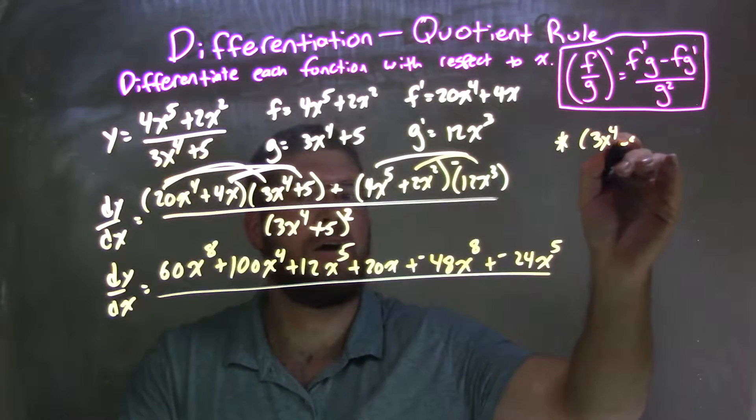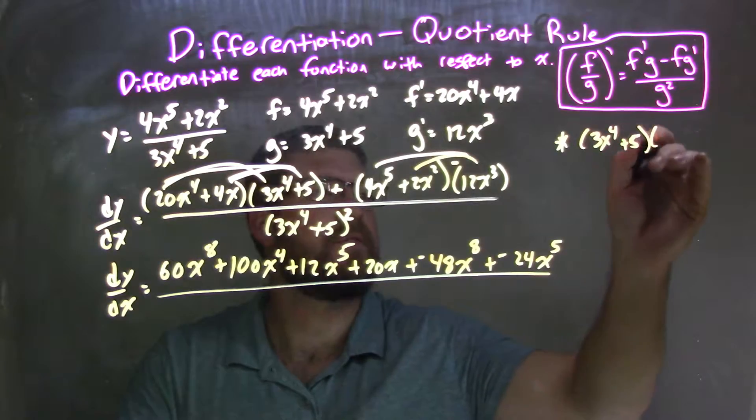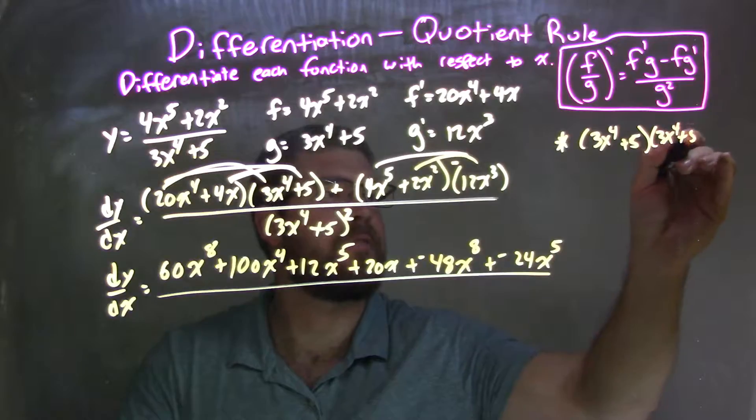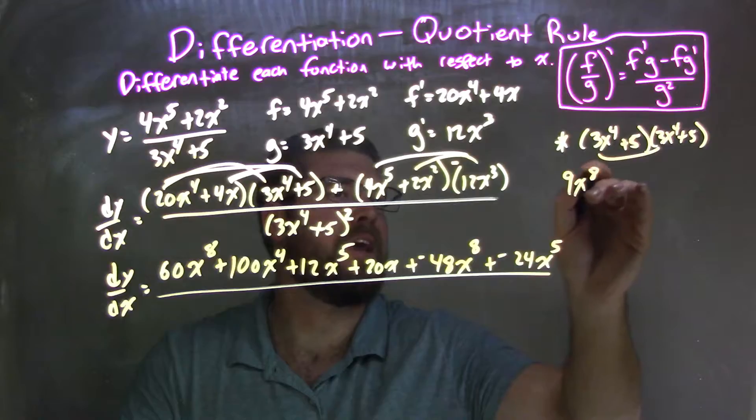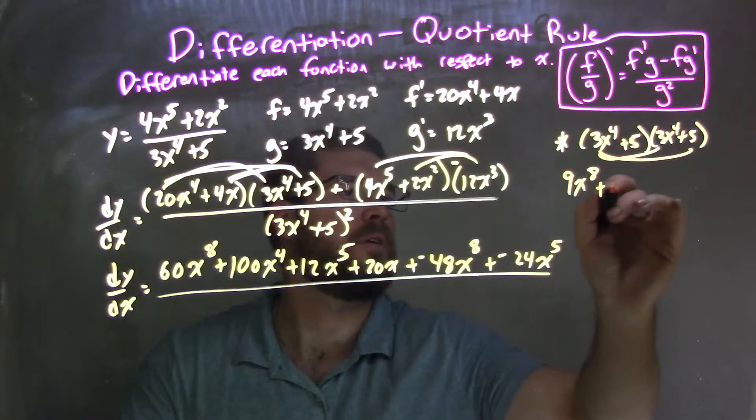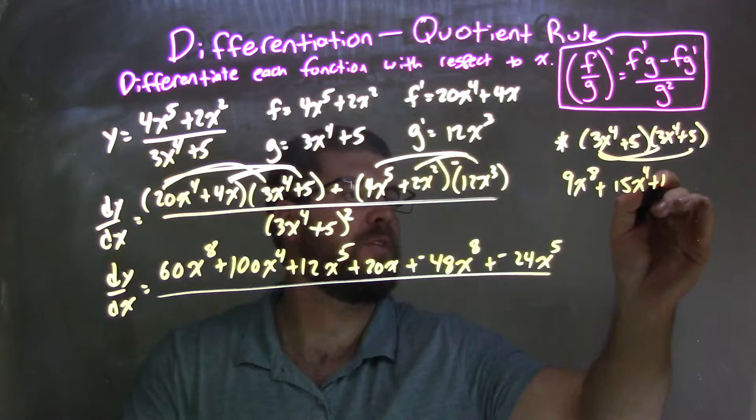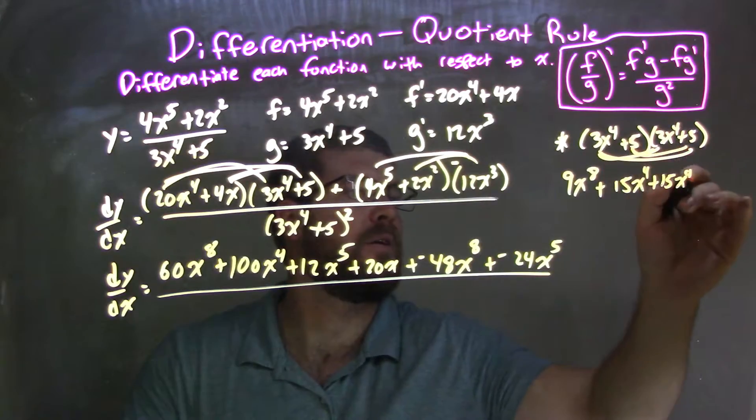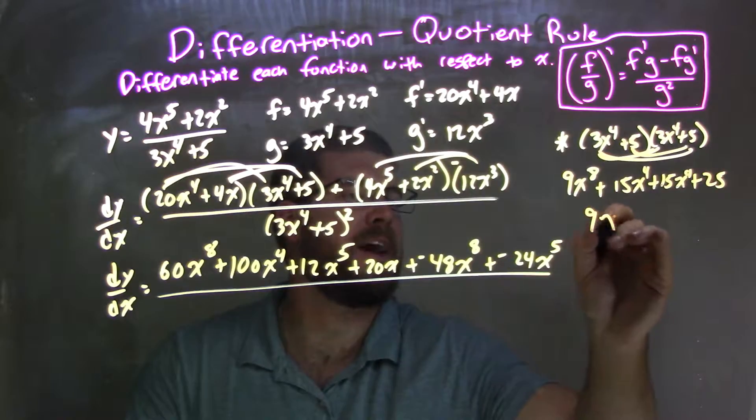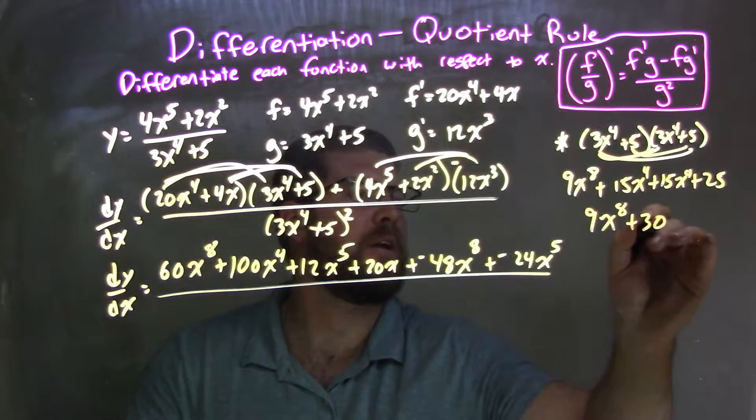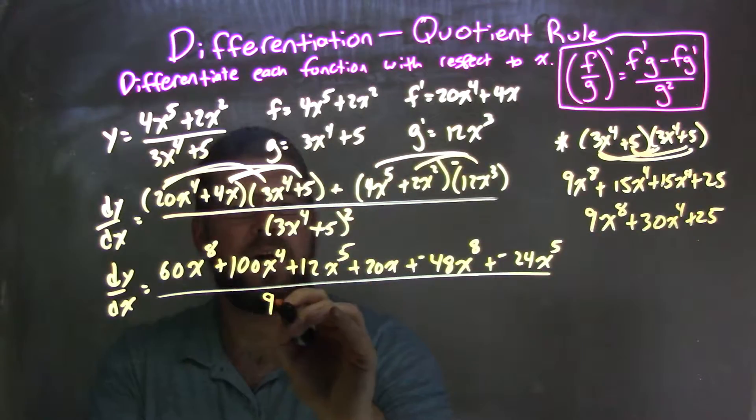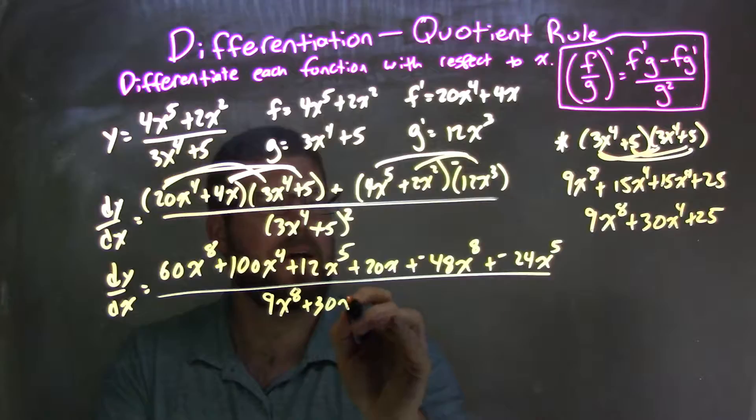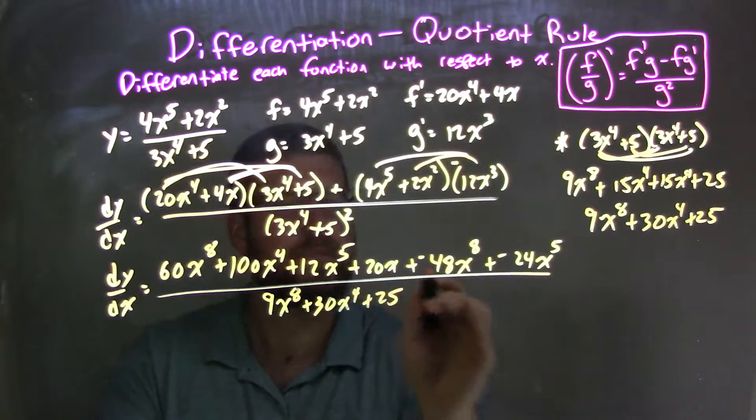All over my denominator, I can simplify over here. 3x to the fourth plus 5 times 3x to the fourth plus 5. When I multiply that out, 3x to the fourth times 3x to the fourth is 9x to the eighth plus 15x to the fourth plus 15x to the fourth. The faster you do it, the more you do it, plus 25. Simplify. 9x to the eighth plus 30x to the fourth plus 25.